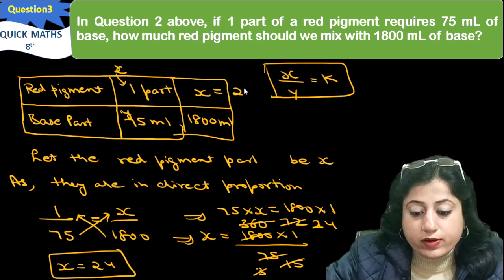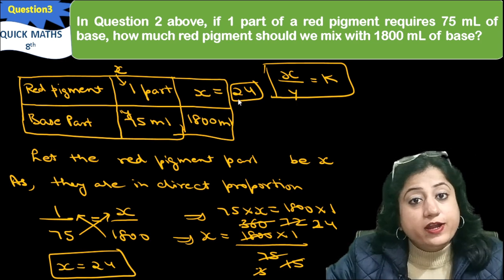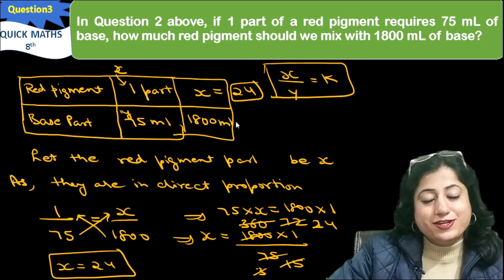So we can say what value we have. How much red pigment will we get? With 1800 ml of base, how much red pigment will we get? 24 parts. So this is the third question solution.